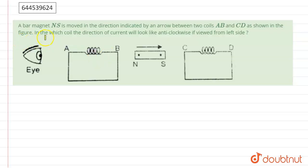According to the question, a bar magnet NS is moved in the direction indicated by an arrow between two coils AB and CD shown in the figure. So in which coil will the direction of current look like anti-clockwise if viewed from the left side?